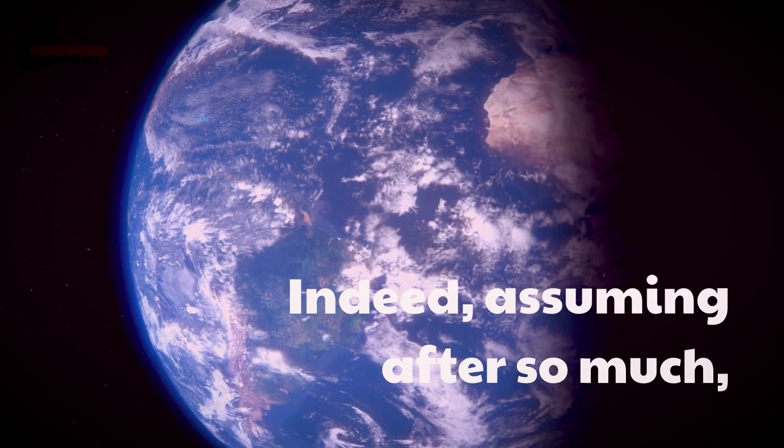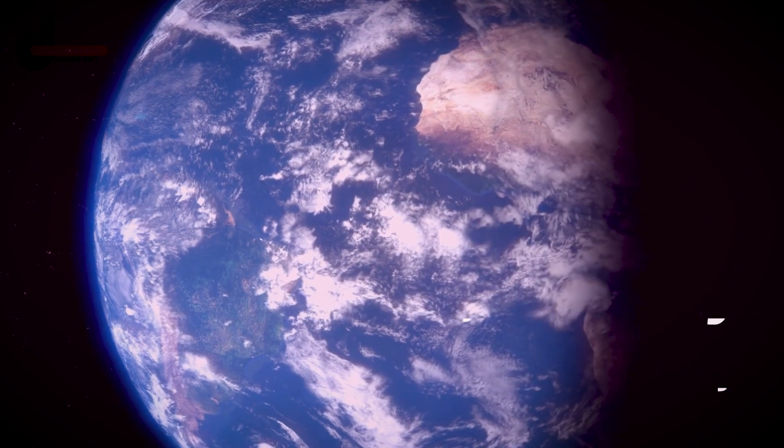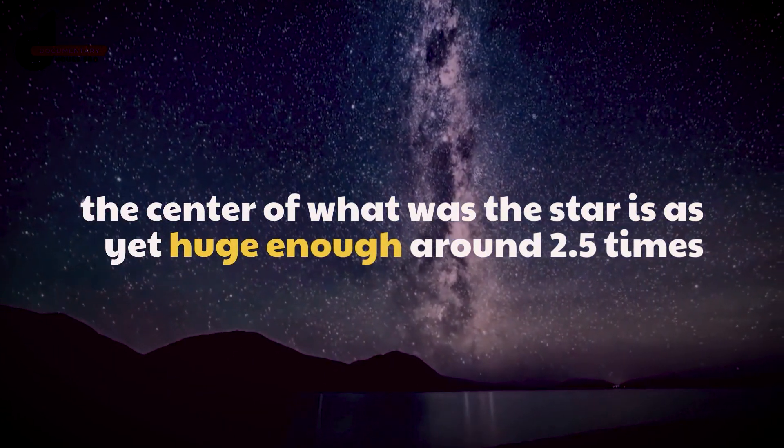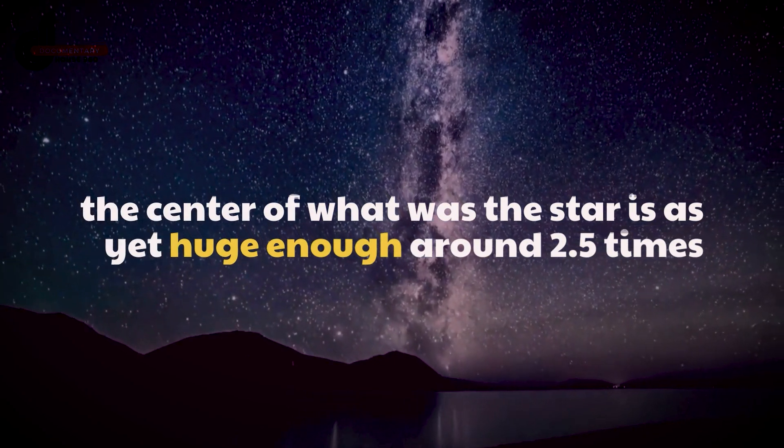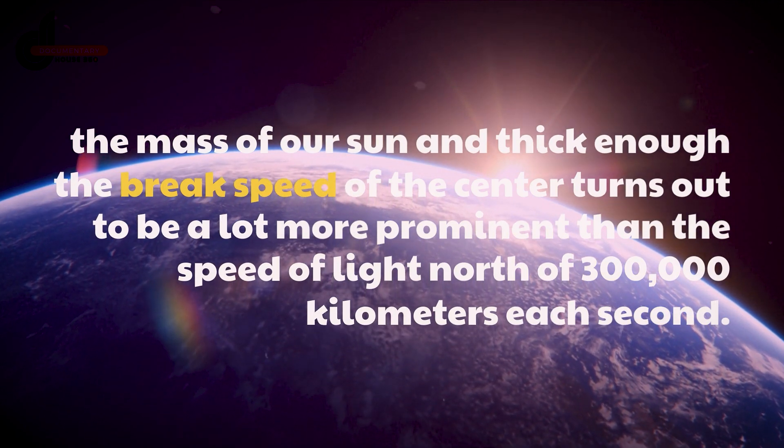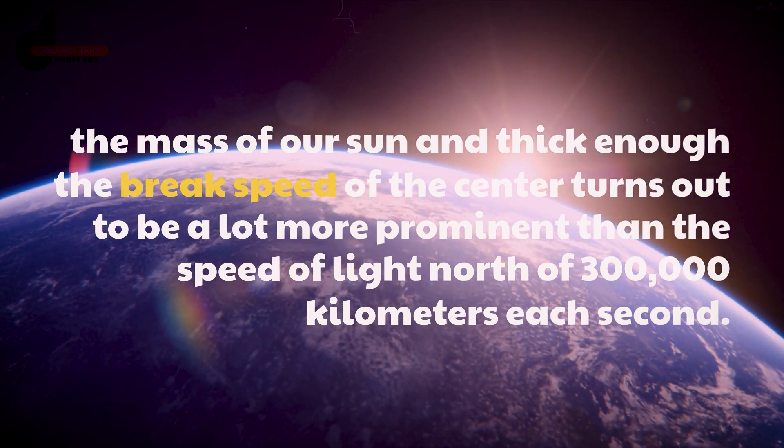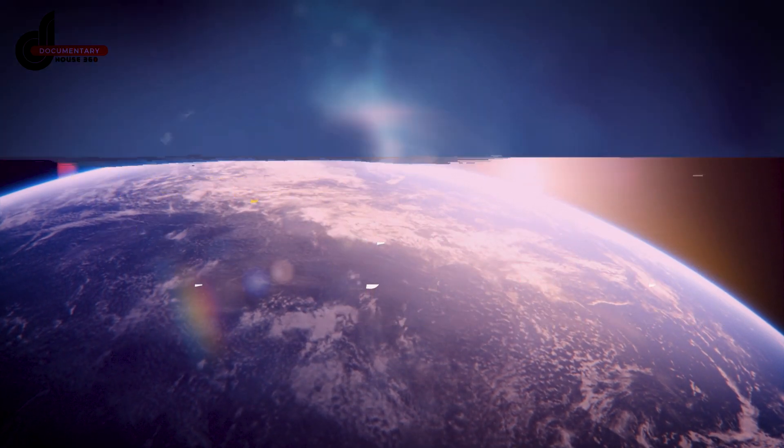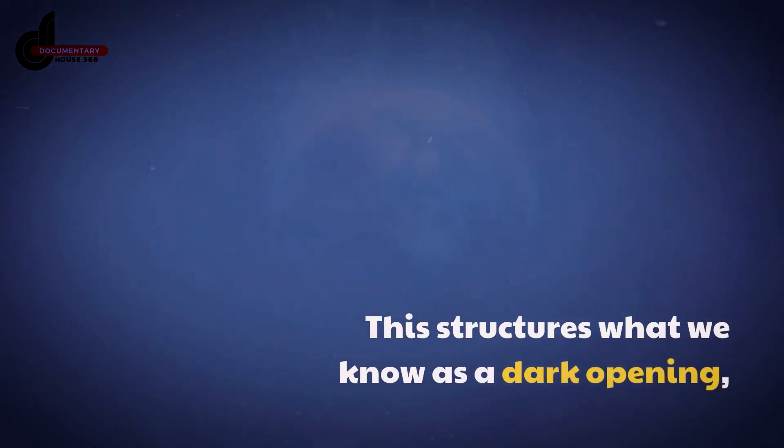Recall how Earth has an escape speed of around 11 kilometers per second? Well, if after all this, the core of what was the star is still massive enough, around 2.5 times the mass of our sun, and dense enough, the escape speed of the core becomes much greater than the speed of light, over 300,000 kilometers per second. This forms what we know as a black hole.